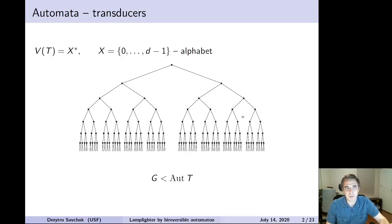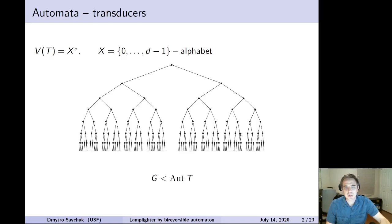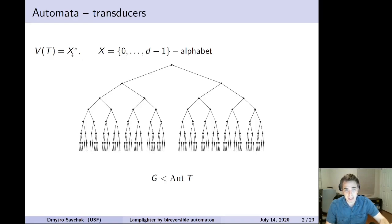I'm going to talk about groups which act on rooted trees like this one. This is a rooted binary tree, and the group acts on these rooted trees by automorphisms. In order to describe these automorphisms, we're going to start with setting up the coordinate system on this tree — namely, every vertex will be labeled by a finite word over an alphabet X.